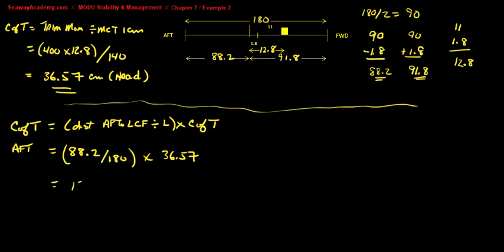Your change of trim aft is 17.92 centimeters. You need to convert this to meters, so you divide by 100 and get 0.1792 meters.